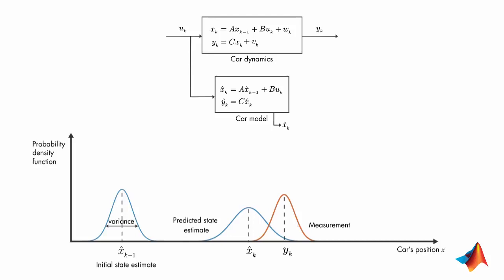Now that we have the prediction and measurement, the question is what is the best estimate of the car's position? It turns out that the optimal way to estimate the car's position is by combining these two pieces of information.